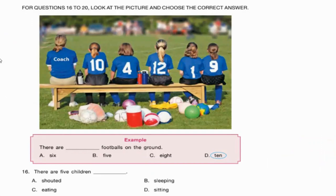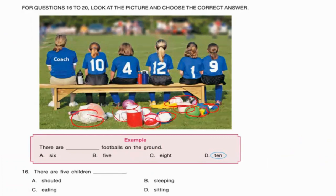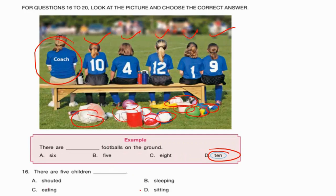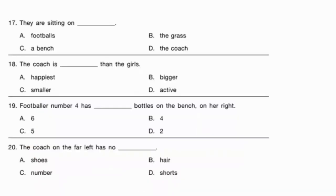Now you are given a picture and must answer questions based on it. For example: 'There are ___ footballs on the ground.' Count the footballs — one, two, three... ten. So the answer is ten. 'There are five children ___.' Count: one, two, three, four, five — yes, five children, not counting the coach. They are sitting on a bench, not shopping, sleeping, or eating. So the answer for the next question is also bench.